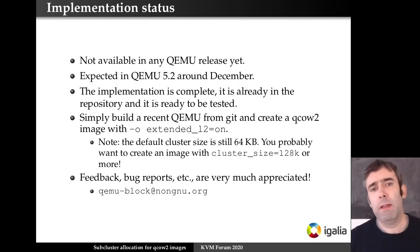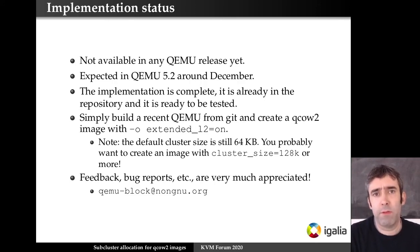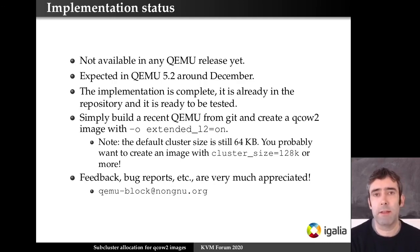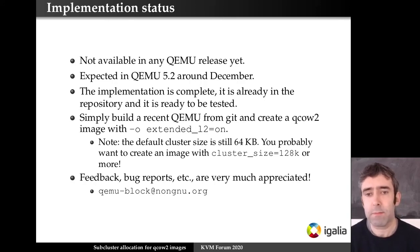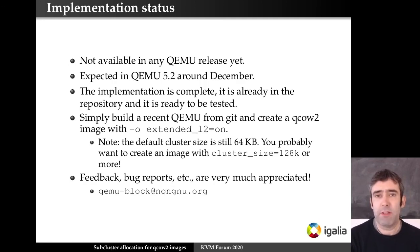So how do you try this? It's not yet in any QEMU release but will probably be available in QEMU 5.2. The feature is complete and already in the repository so you can test it now: download the latest version from Git, compile it, and create an image with the option 'extended-l2' enabled. You'll also probably want a larger cluster size — the default is 64k but with this feature it makes sense to use larger clusters. Feedback, bug reports, suggestions are very much appreciated. You can write to the mailing list or contact me directly.